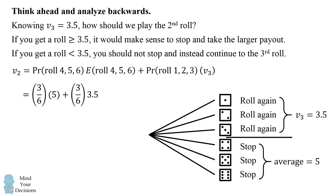And the other 3/6, or half the time, we'll roll to the third and get an average payout of 3.5. So the value on the second roll is the average of these possibilities, which equals 4.25.